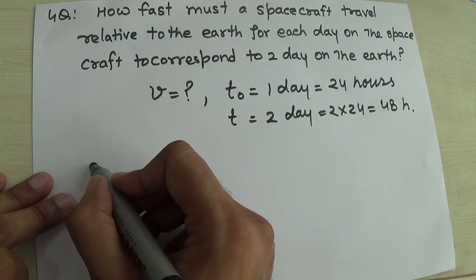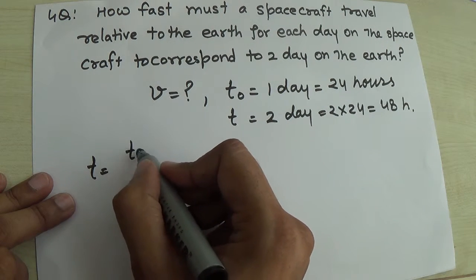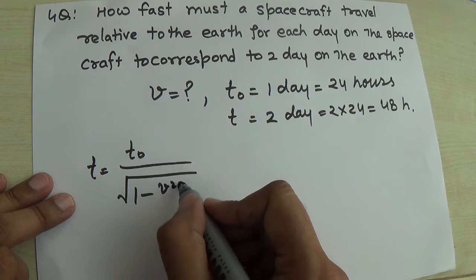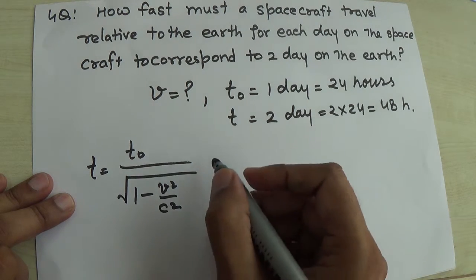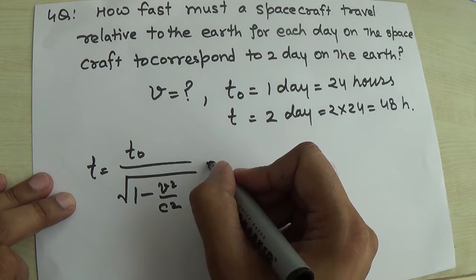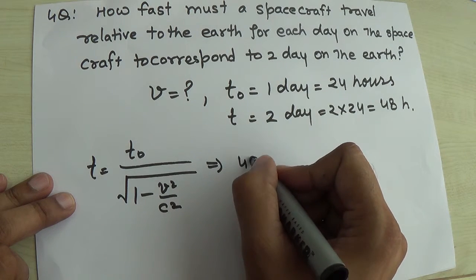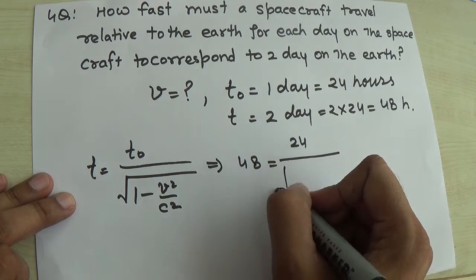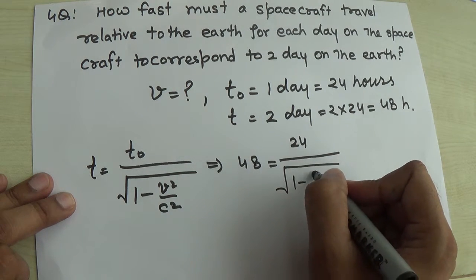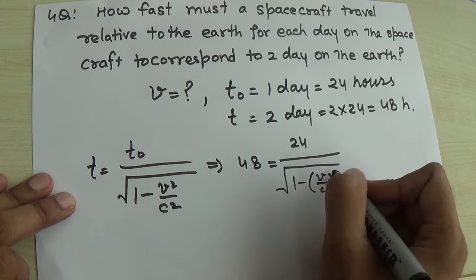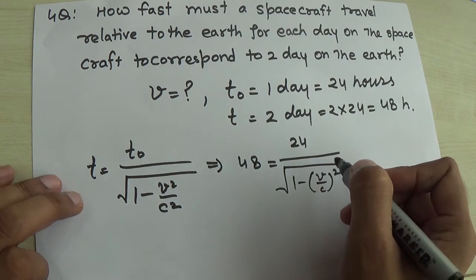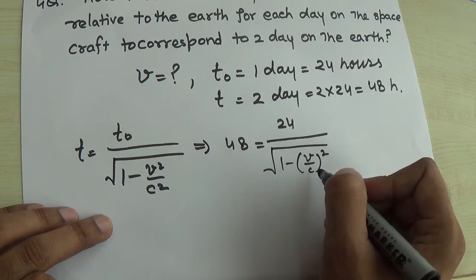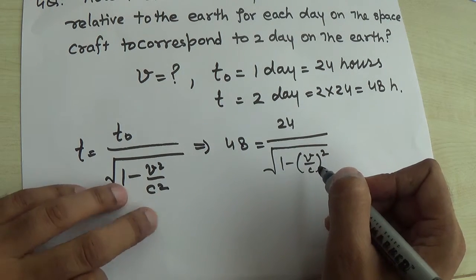Now we can find the velocity using the time dilation formula: T equals T-naught divided by the square root of (1 minus V-squared over C-squared). Here T is 48, T-naught is 24, and we need to rearrange to find V.